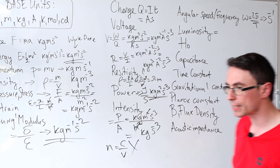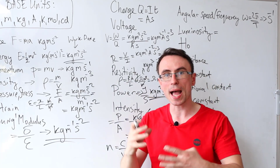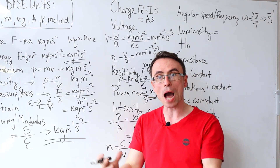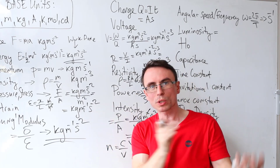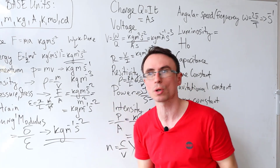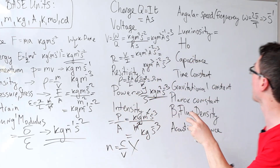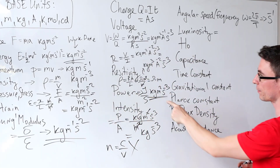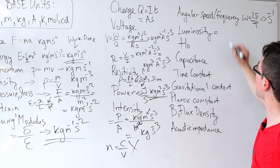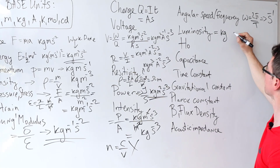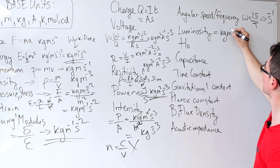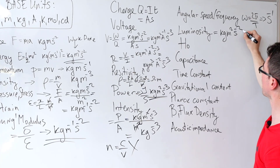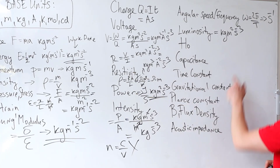Luminosity is defined as the total radiated outward power of a star — it's basically what astronomers call power. So it has the same units as power: kg m² s to the power of minus three.